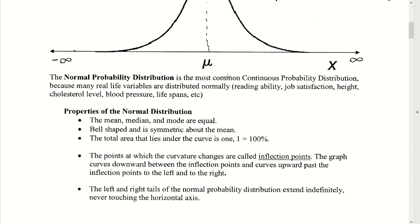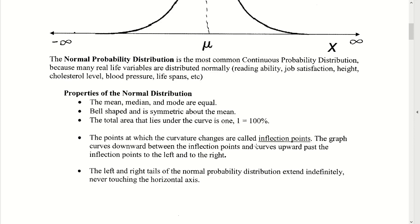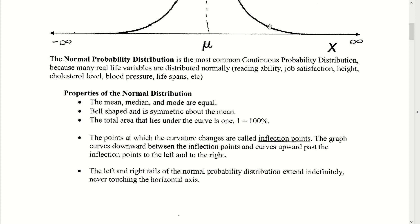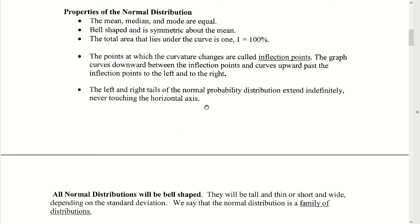The total area under the curve is going to be equal to 1, which is equivalent to 100% of the data. Inflection points, while important, we will not focus on them much in this course. But one thing you definitely want to know is that the normal distribution extends infinitely far to the left and to the right, and it should never cross that horizontal axis.